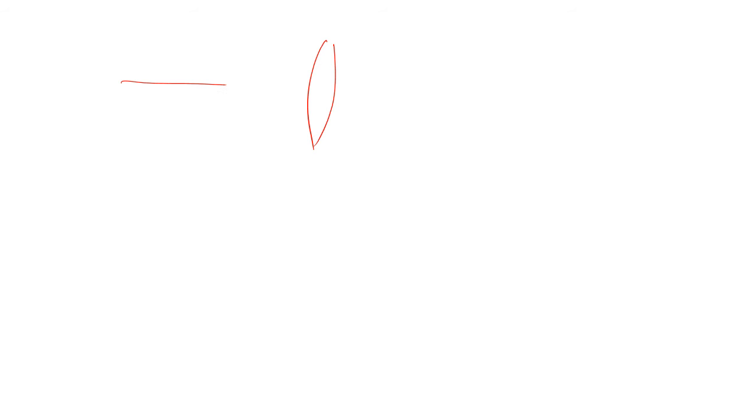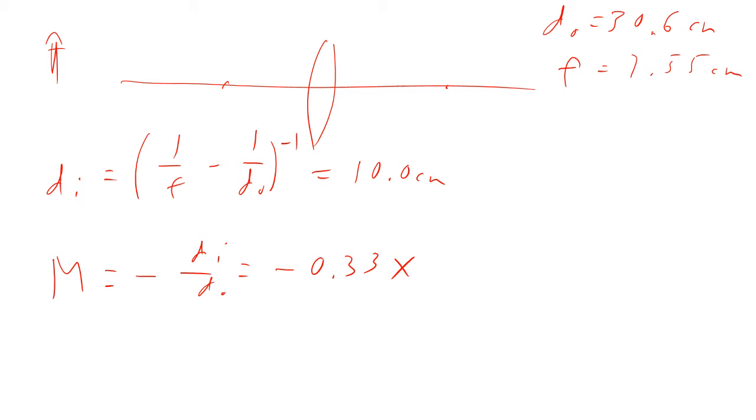Same lens though. So imagine the same lens, now we have an object much farther away. So the do is now going to be 30.6 centimeters. It's the same lens, so f is still going to be 7.55 centimeters. So same equation, so di equals 1 over f minus 1 over do to the minus 1. If we plug in our numbers, then the numbers come out to be 10 centimeters.